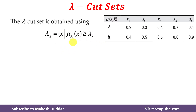Let A be a fuzzy set. To calculate the lambda cut of fuzzy set A we use the following formula: the lambda cut of fuzzy set A contains all those members x where the membership value of x in the fuzzy set A is greater than or equal to lambda. Let's take some examples to understand how to calculate the lambda cut.